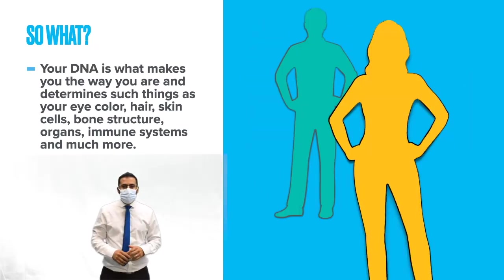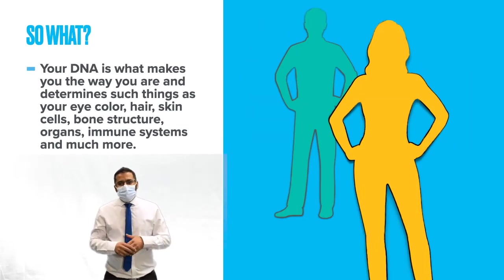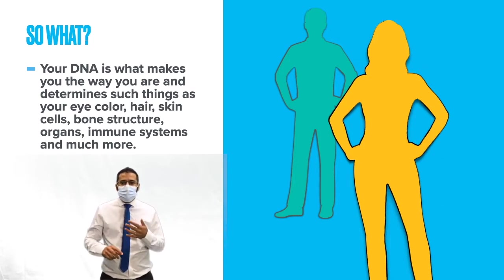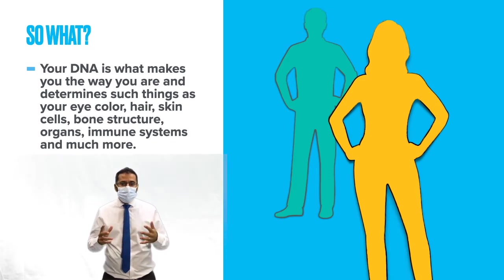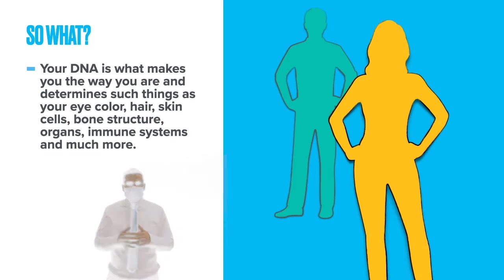So what does that mean? Well, your DNA is what makes you the way you are and determines things such as your eye colour, your hair, your skin cells, your bone structure, organs, your immune system, and much much more.